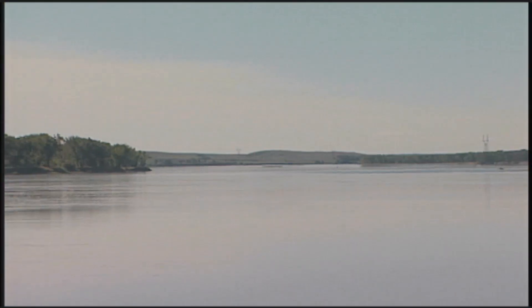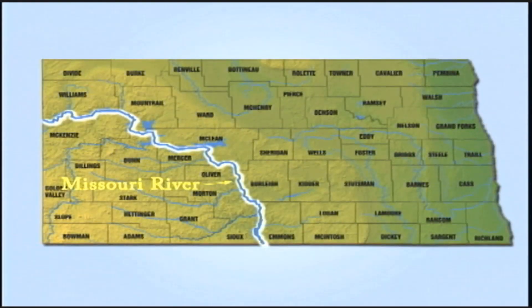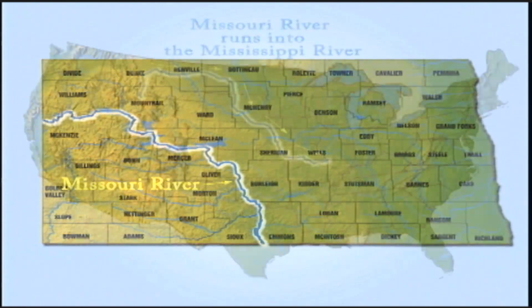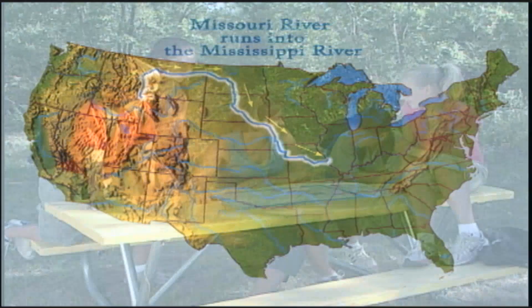You guys did a great job locating some of North Dakota's rivers. Now we're going to spend the rest of the day exploring the Missouri River and its riparian areas. The Missouri River is the largest river in North Dakota. It begins in southwestern Montana and runs through the middle of North Dakota, eventually connecting to the Mississippi River near St. Louis, Missouri.